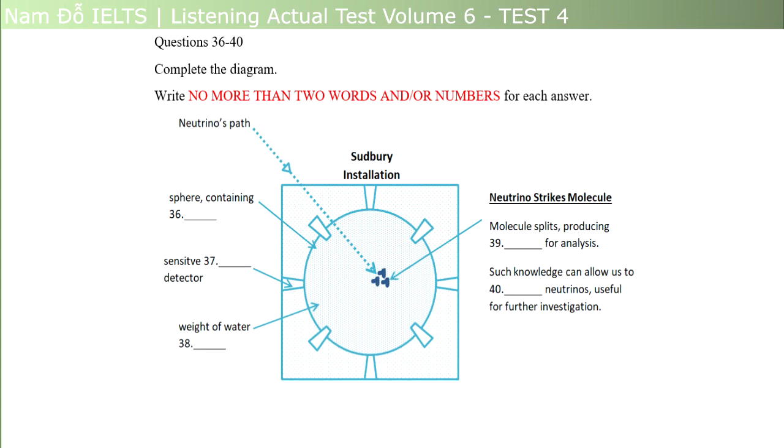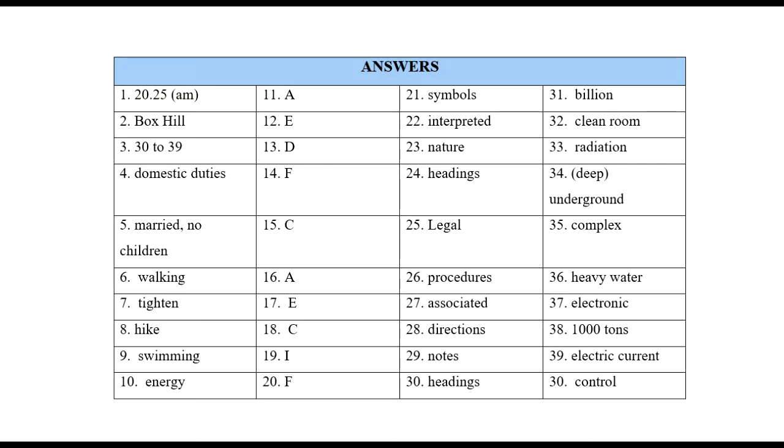The final question is why do we care about these elusive particles? Well, just think. They can pass right through the core of our sun at the speed of light without being affected or losing strength. No other form of radiation can do that, meaning that the knowledge we get about neutrinos can help us to control them. With this ability, we can probe the center of our earth, the inner layers of our sun, and the outer limits of our solar system. And that makes it all worth the effort. That is the end of section 4. You now have half a minute to check your answers.